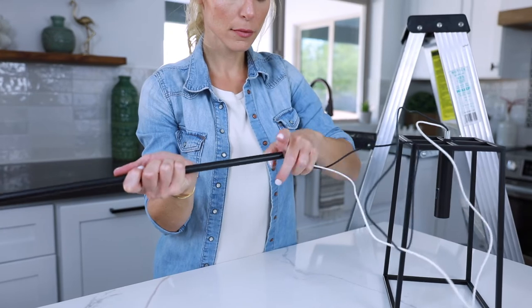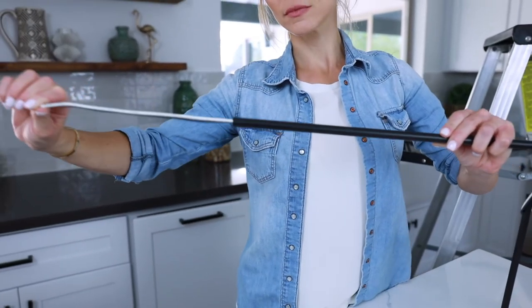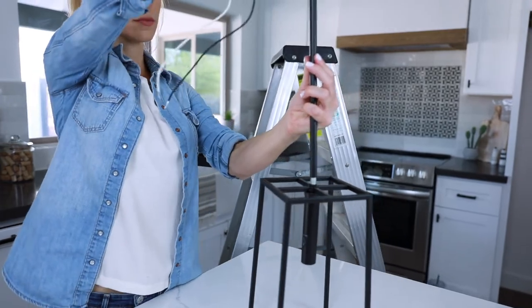Pass wires through each rod and canopy. Thread together. Ensure wires are not twisted.